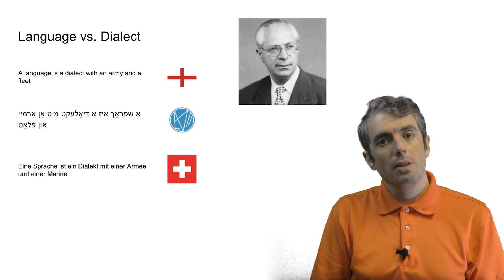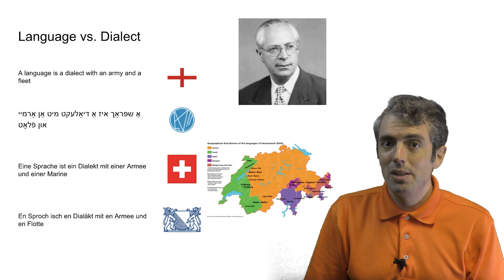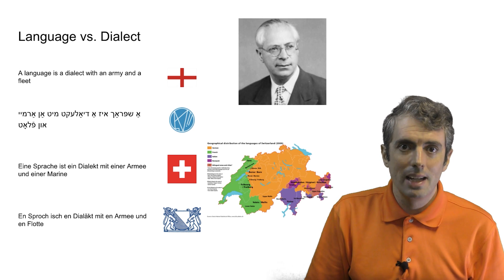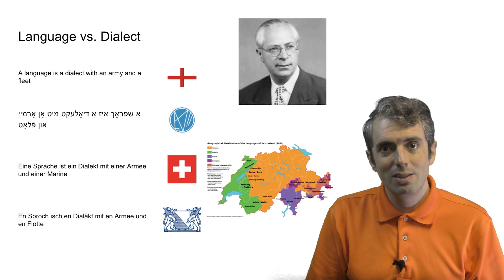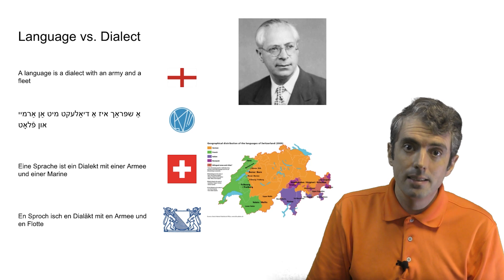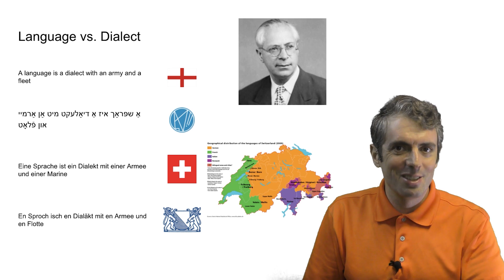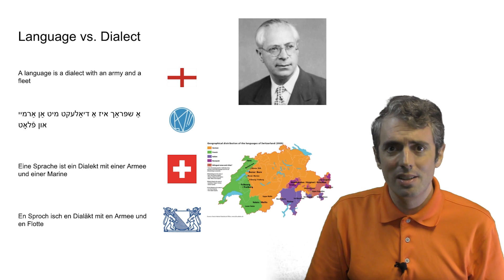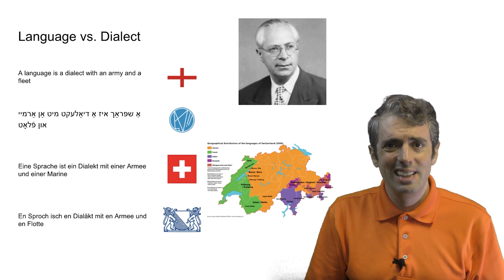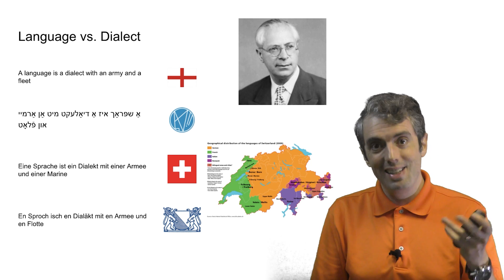German is, for example, one of the four national languages of Switzerland. But you wouldn't hear standard German if you went to Zürich — you'd likely hear a Swiss dialect. But unlike standard German, the Zürich region doesn't have its own army or fleet. So it's not considered an independent language; it is a dialect.